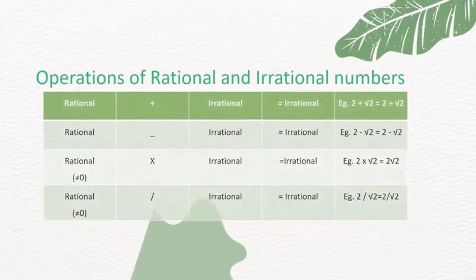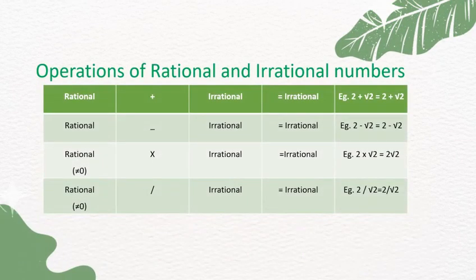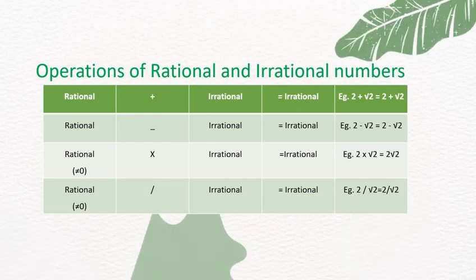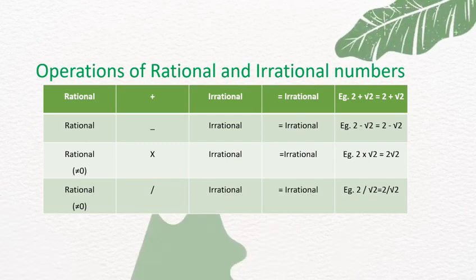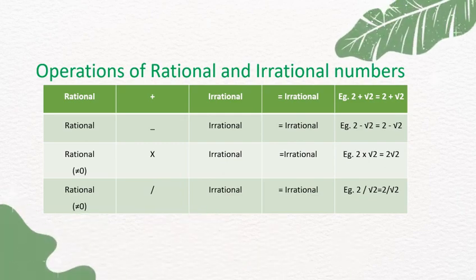Operations of rational and irrational numbers: a rational number plus an irrational number equals an irrational number. For example, 2 is rational and √2 is irrational; 2 + √2 equals 2 + √2, which is an irrational number.